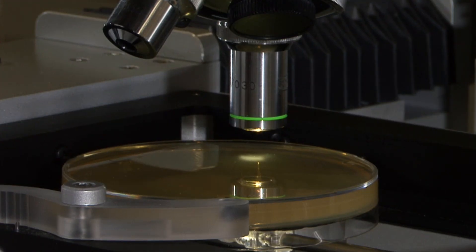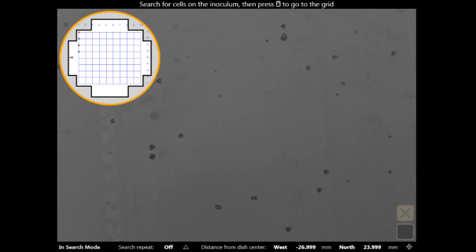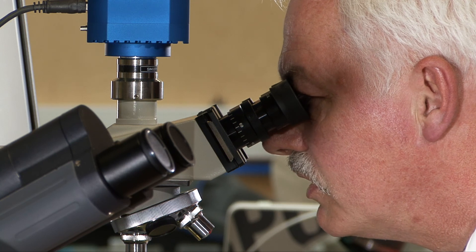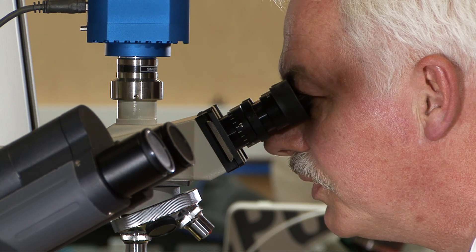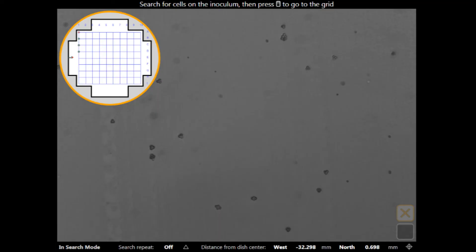Now, I go back to the inoculum to find another tetrad. It goes back exactly in the same position. So, had I picked up three spores, I would have been able to pick up the final spore, which would have been here. And that's it.